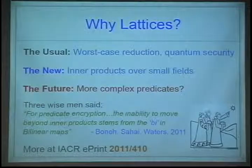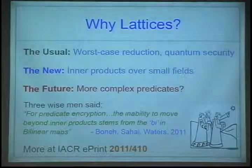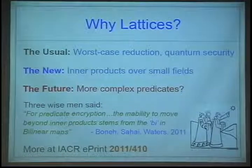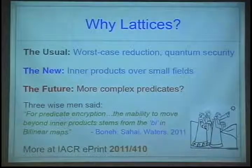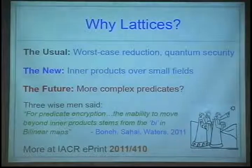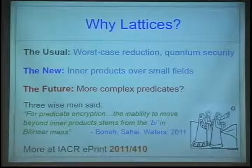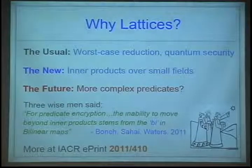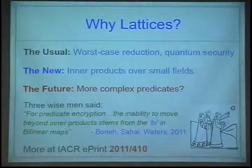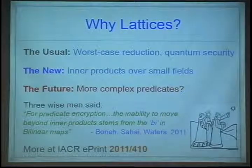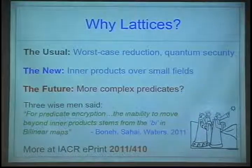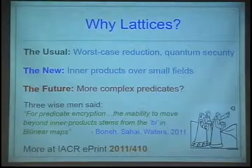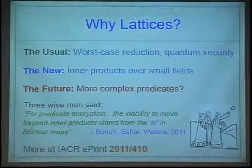Why lattices? By now we've seen so many constructions. There are always the usual reasons: worst case reductions and quantum security. But there are new reasons as well. We can handle smaller moduli that bilinear world constructions can't. Our keys are also smaller. And most importantly, most excitingly, we expect that in the future we should be able to handle more complex predicates. Lattices gave us fully homomorphic encryption, so it's very likely that they give us more than just inner products.